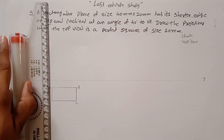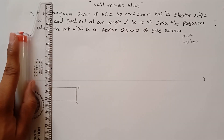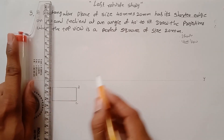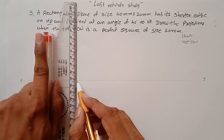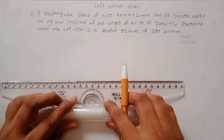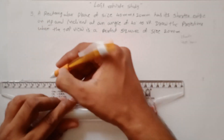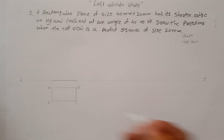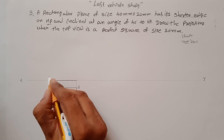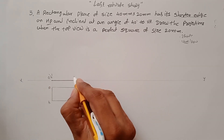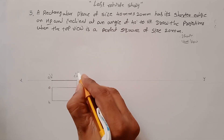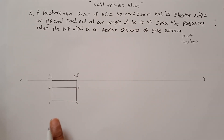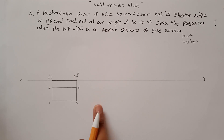The front view of the plane is a straight line. You project the top view onto the XY line and draw the front view as a straight line. Label the points A', B', C', and D'. The initial position is now complete.